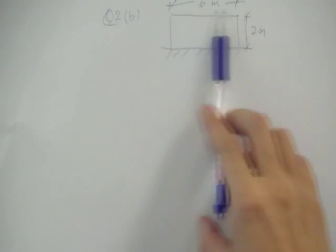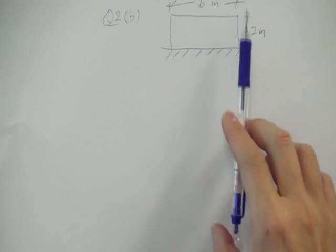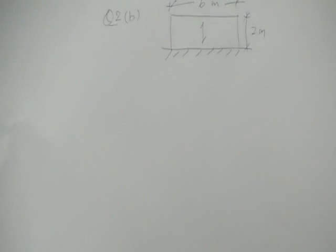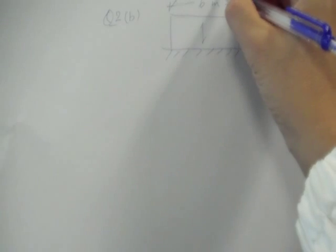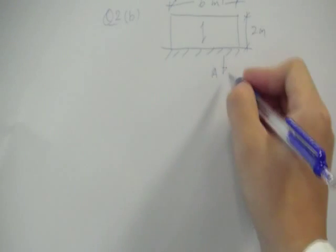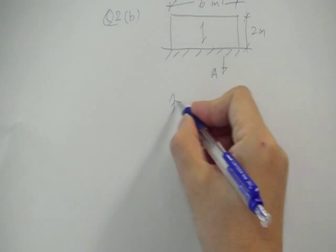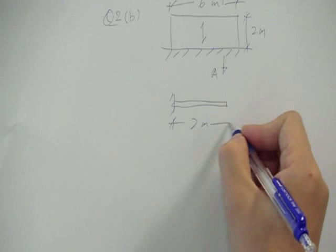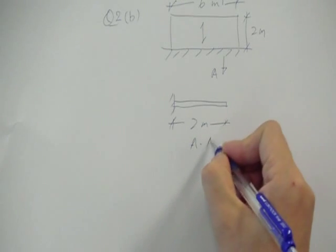And the slab is fixed along its long edges and no support around the remaining 3 edges. So the slab will actually bend in this direction only like a cantilever. So if you cut the section here, if you draw your section AA, it looks something exactly like a cantilever. So that's 2 meters if that is your section AA.